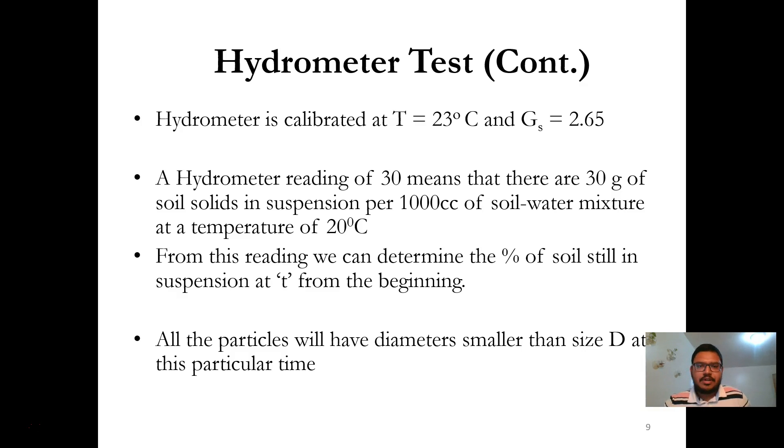Usually, the hydrometer is calibrated at 23 degrees Celsius and for specific gravity 2.65. So, if the temperature changes or the specific gravity is different than 2.65, then we need to apply some correction factors.